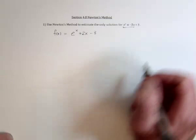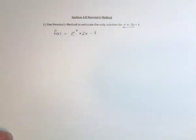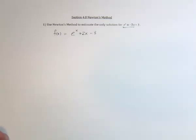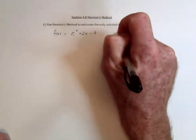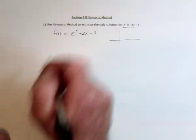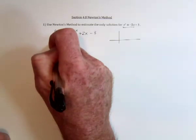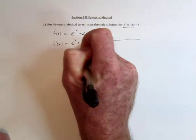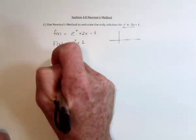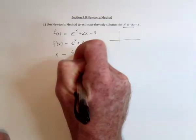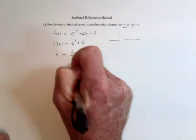And then we use the idea that we make a guess, and after we make a guess, we use the derivative. So the derivative would be e^x plus 2. And then the general formula is x minus the function over the derivative.